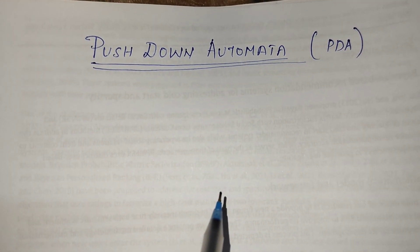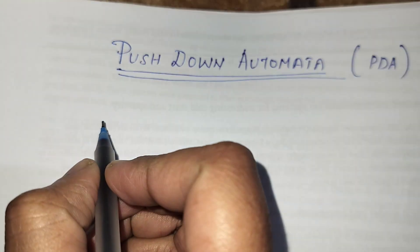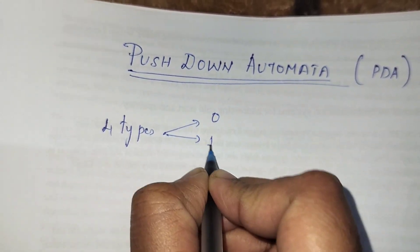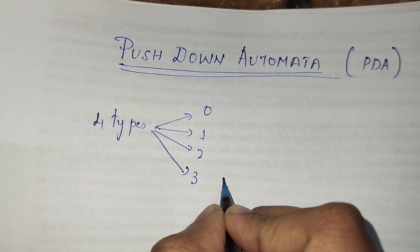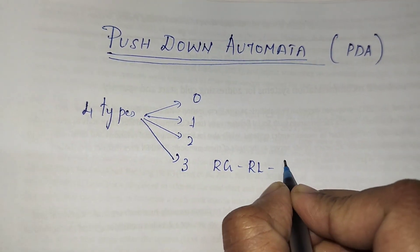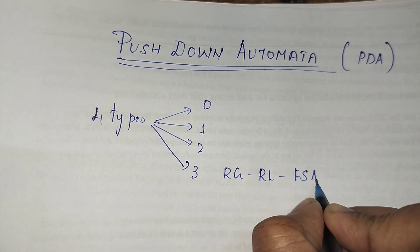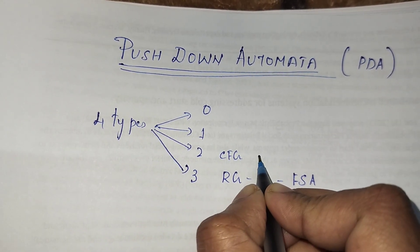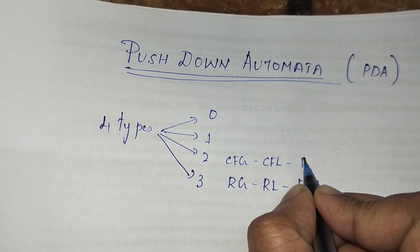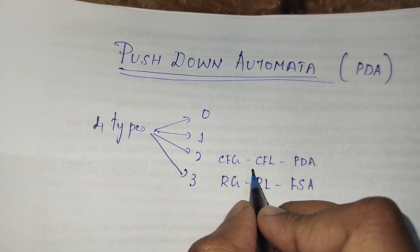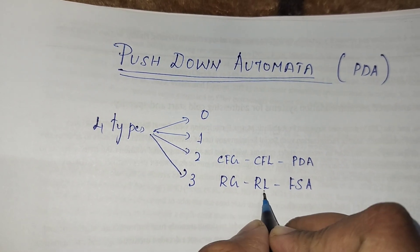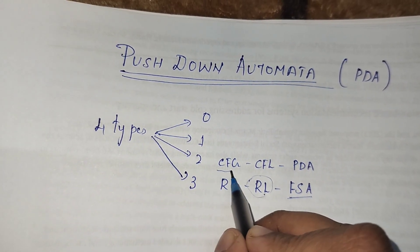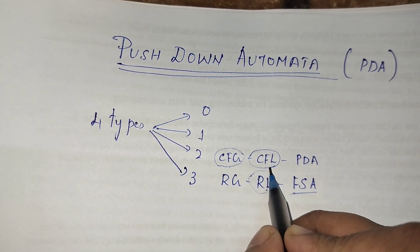Next we start pushdown automata, Unit 4. According to the Chomsky hierarchy there are four types of grammar: Type 0, Type 1, Type 2, and Type 3. Type 3 grammar is regular grammar, which generates regular languages and is accepted by finite state automata. Type 2 grammars are context-free grammars, which generate context-free languages. You have already studied context-free grammar and context-free languages.